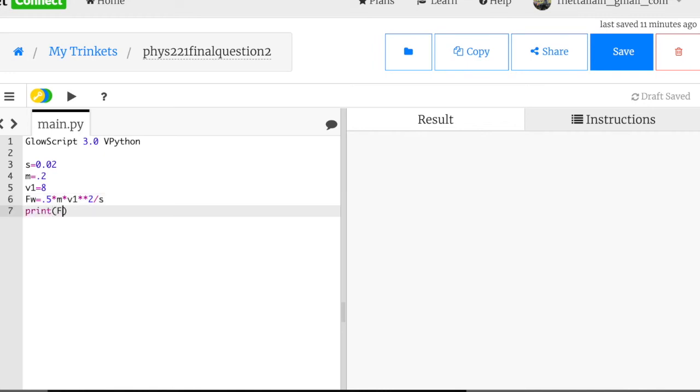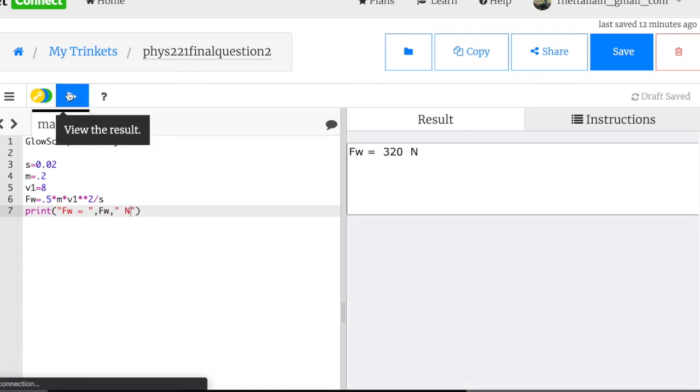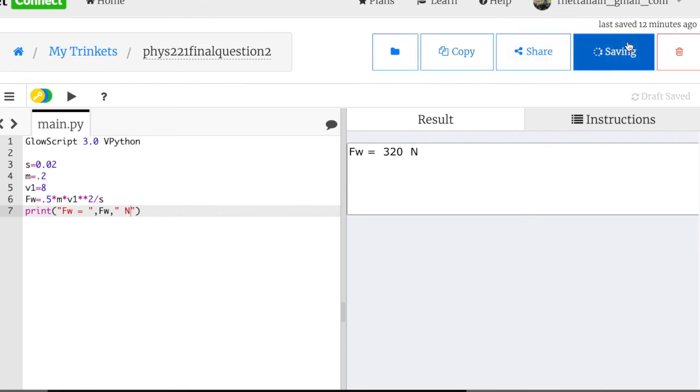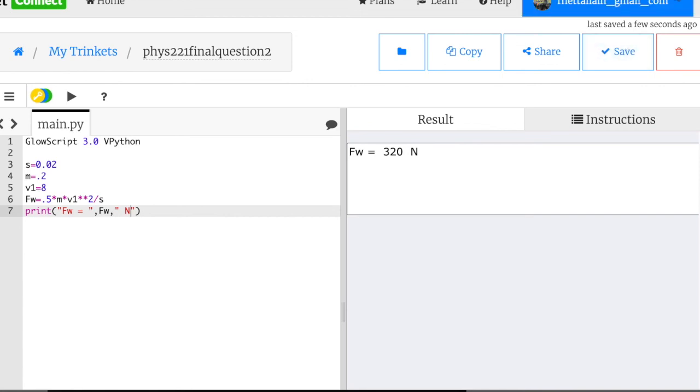Now I'm going to print that. Print fw equals fw newtons. Run it. 320 newtons. And that's your answer. Okay, I'll give you the link to this code. I'm going to save it right now. I could give you a long talk about how Python is awesome too. But I've done that a couple times. So Python is awesome. You could use a calculator. That would be fine. But I like Python. Okay, I'll do another problem soon.